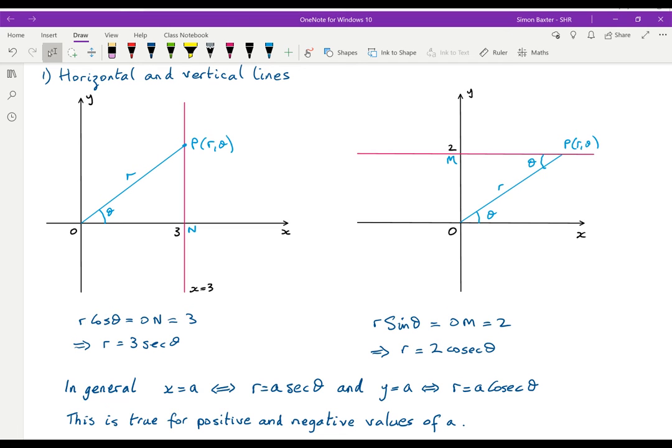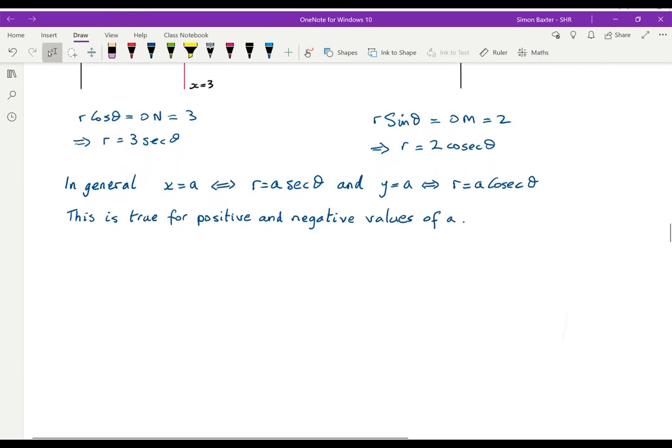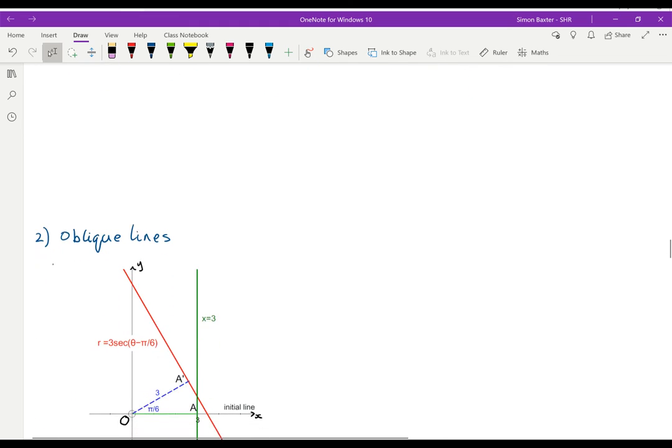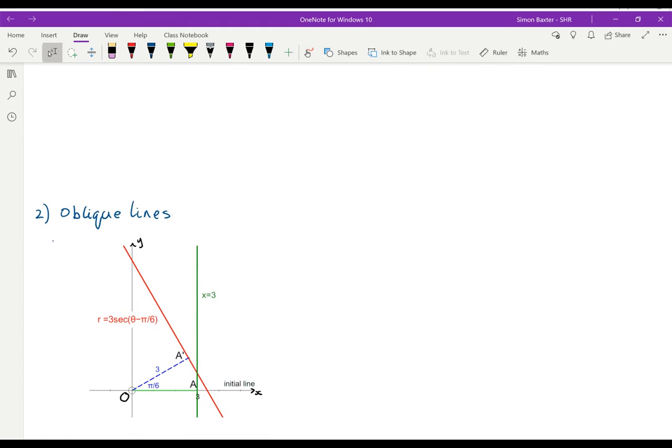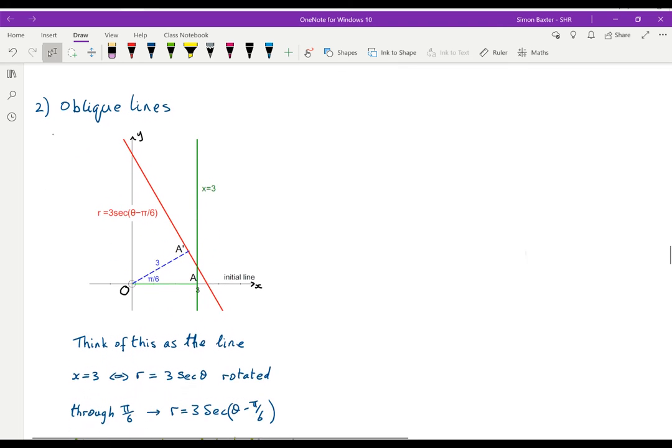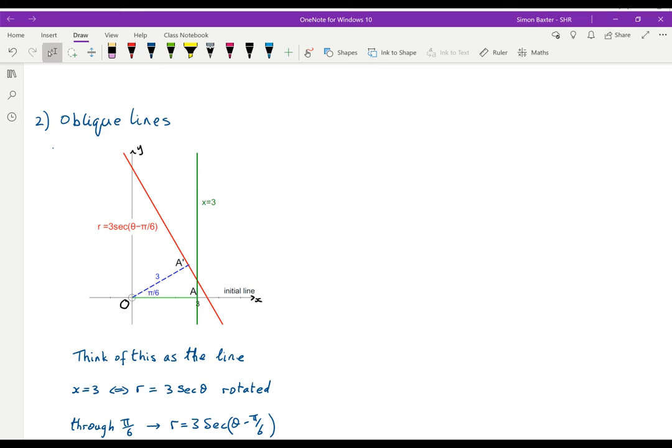Let's now see what happens if we look at lines which are not horizontal or vertical. Oblique lines. So here, I have an oblique line. And I've given the equation and we'll talk about that. If we look at the line x equals 3, the line I've drawn actually has a perpendicular distance from the origin to the line of 3. It is the line x equals 3 rotated about the origin through pi by 6.